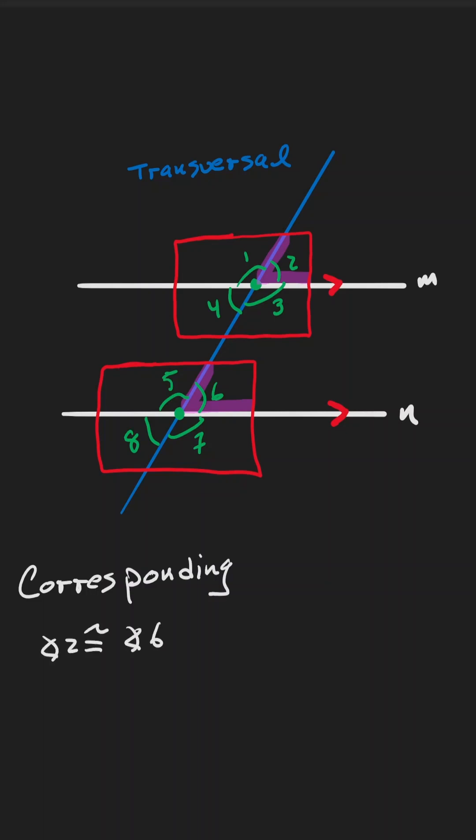The same can be said about angle three and angle seven. They are on the bottom right hand side of that intersection. They're on the same location, then they are corresponding.